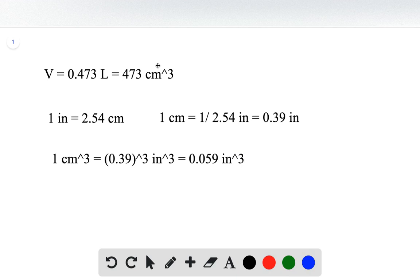So now we know that 1 cubic centimeter equals 0.059 cubic inch, we can write it as 473 times 0.059 cubic inch. And that is roughly equal to 27.907 cubic inch. So that finished this problem.